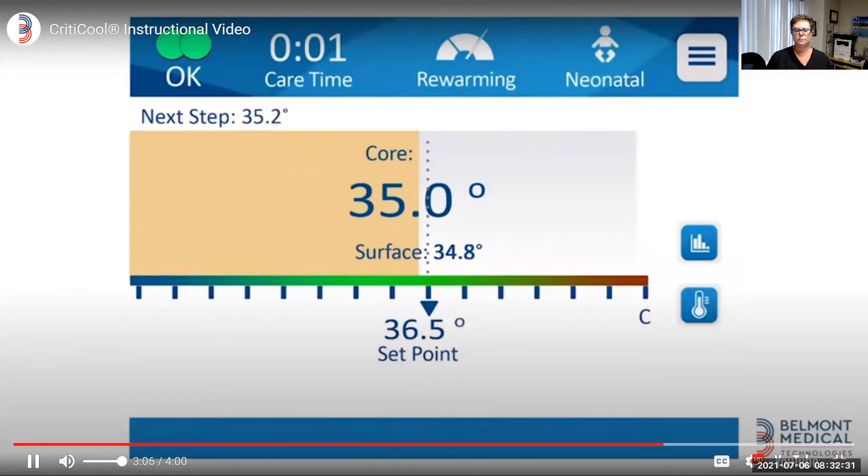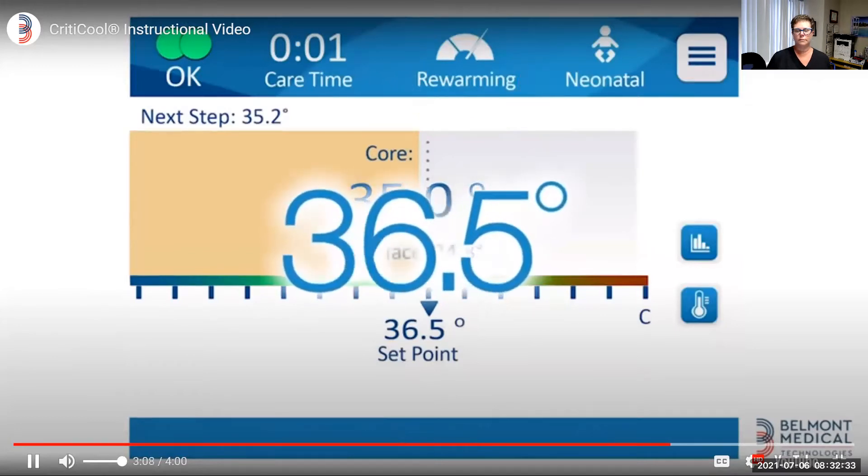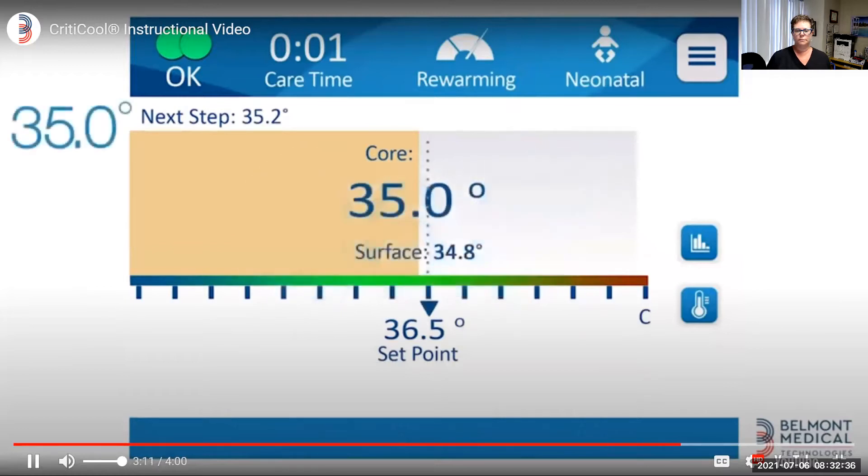The pre-programmed target temperature is 36.5 degrees Celsius in a stepwise fashion of 0.2 degrees Celsius per one hour. Those settings can be changed per the clinician's discretion. The system will reach the desired temperature and maintain it until the treatment is complete.